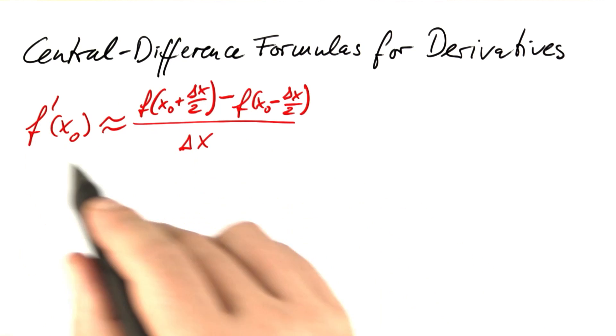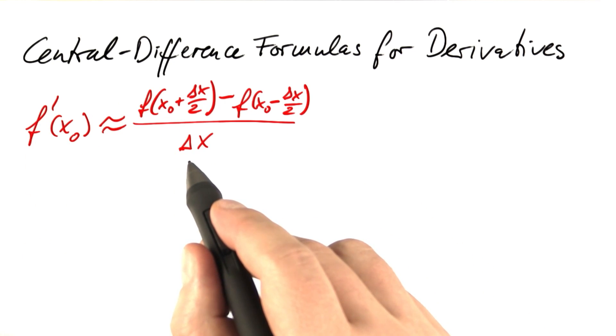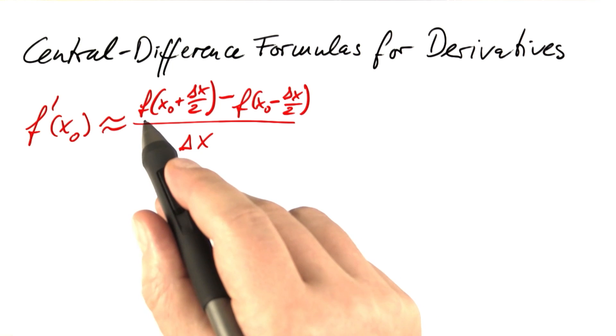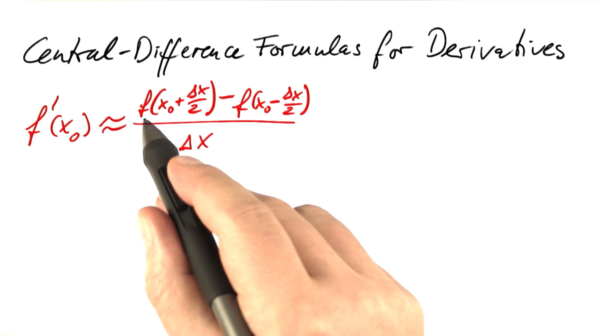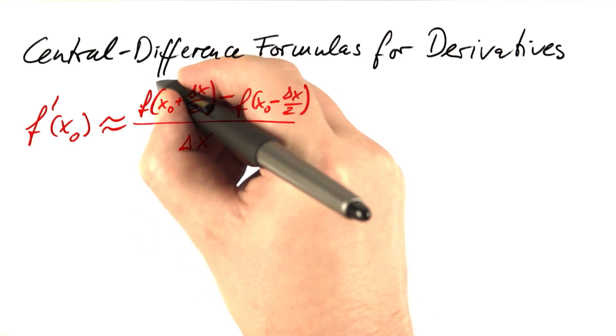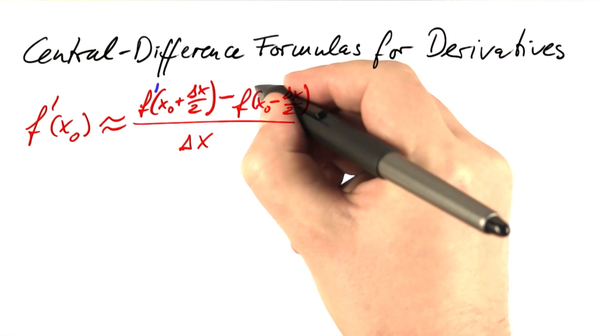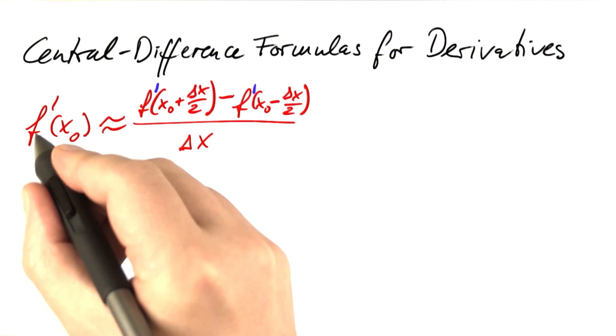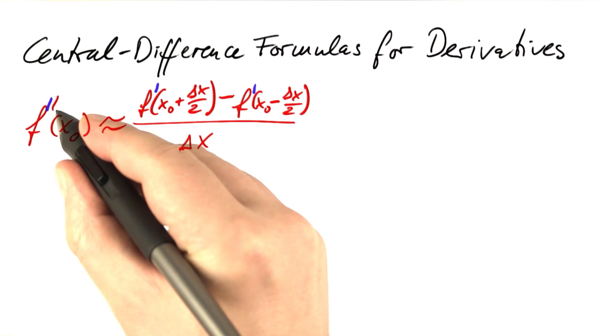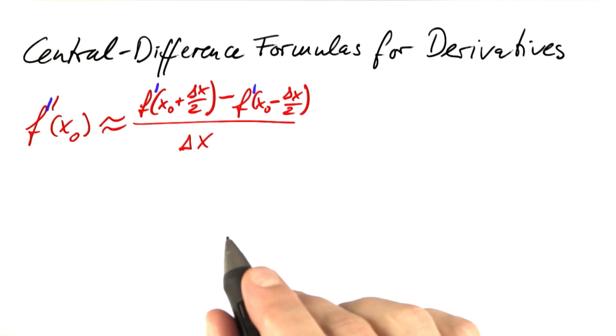We simply use this formula not for the original function, but for its derivative. You replace f by f' wherever you find an f. So this f becomes an f', this f becomes an f', and this f becomes an f'', the second derivative.